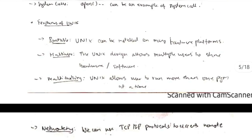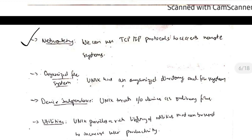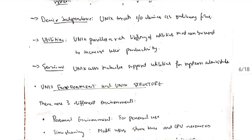Features of Unix include: it is portable; multi-user — there are multiple users for it; multitasking; networking — we can access remotely; organized file system; data independence; utility — there are many tools in it; and the services provided by it are also very useful.